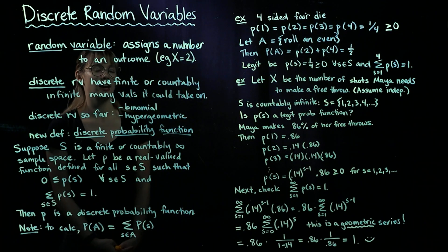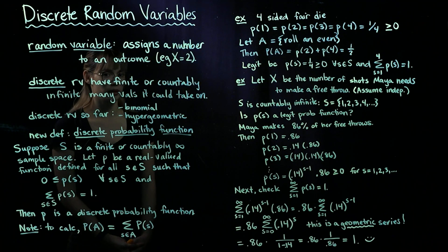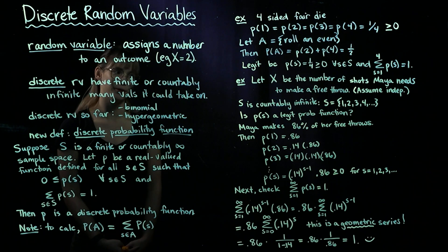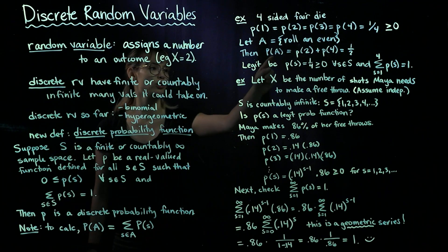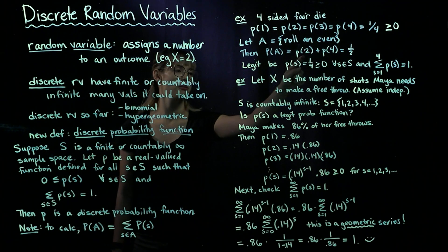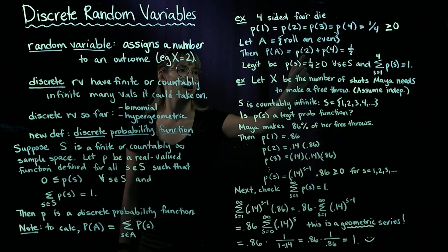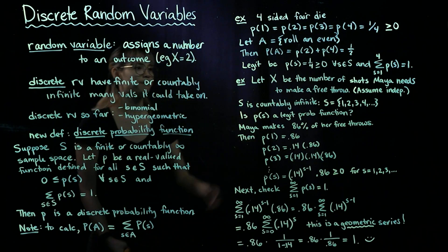So let's look at the event A — that we roll an even. There are two ways to roll an even: we could roll a 2 or we could roll a 4. So the probability of rolling an even is equal to the probability of rolling a 2 plus the probability of rolling a 4. So we have a quarter plus a quarter, which is a half.